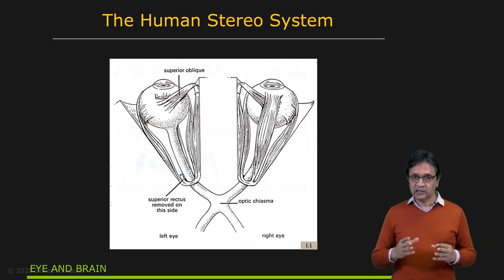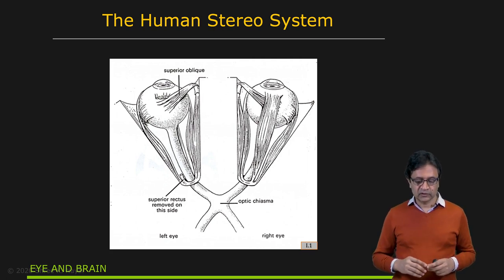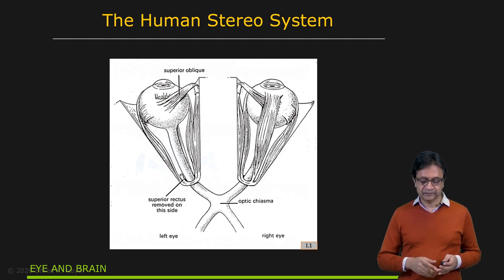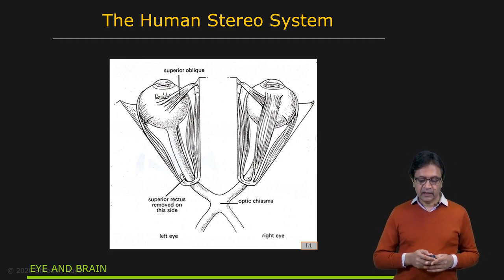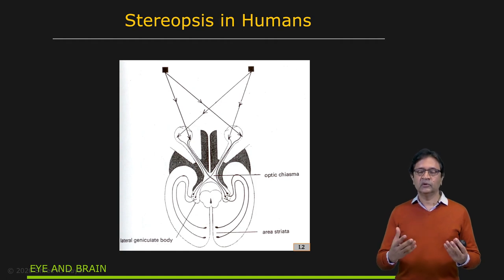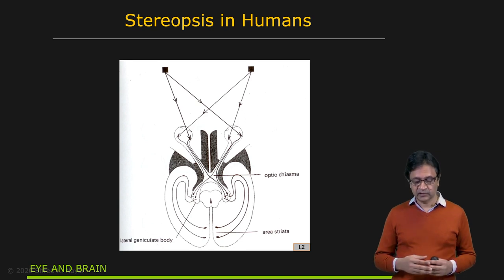Vergence is made possible by a very sophisticated servo control system which uses six muscles — called ocular muscles — in each of the two eyes. The two images that are captured are processed for depth perception; that is, you're doing stereo matching.